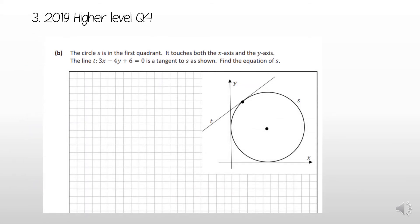The second part of the question: circle S is in the first quadrant, touches both the x-axis and the y-axis, and the line t given by 3x − 4y + 6 = 0 is a tangent to S. We need to find the equation of S. The tangent line t touches the circle, the y-axis is a tangent touching the circle, and the x-axis is also a tangent touching the circle.